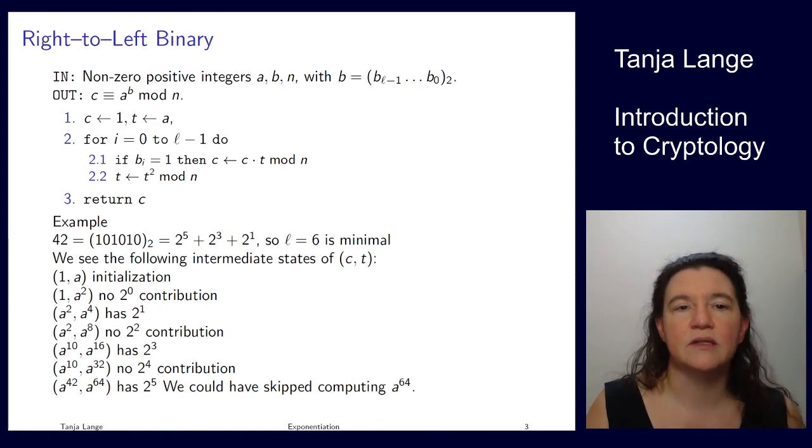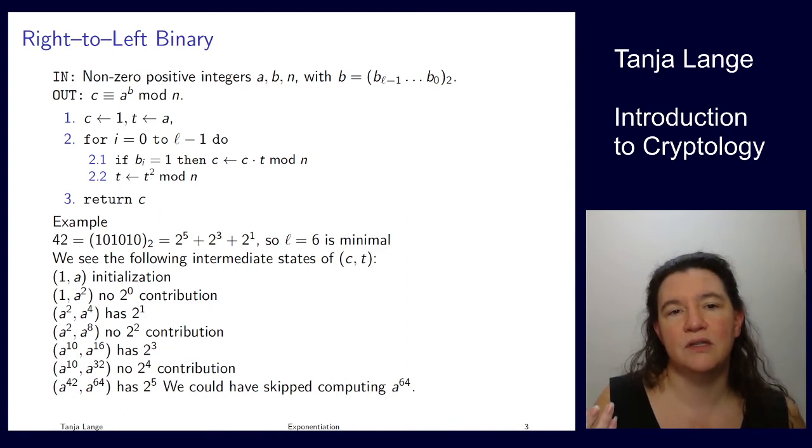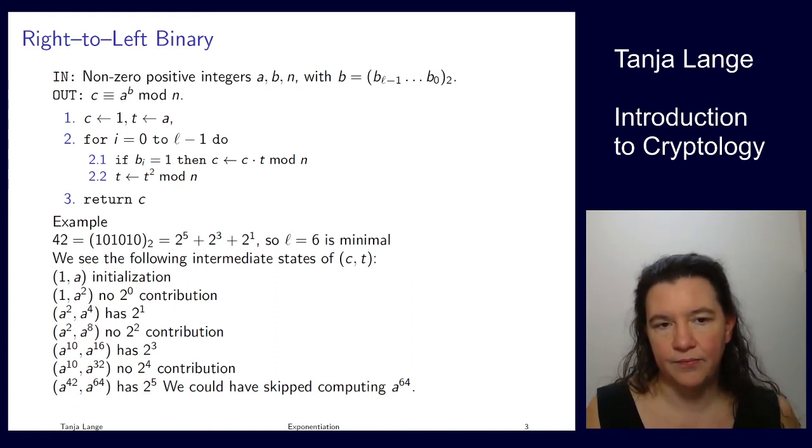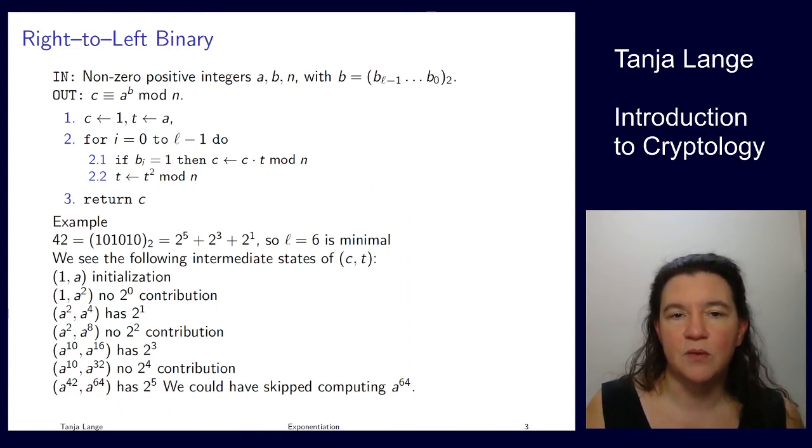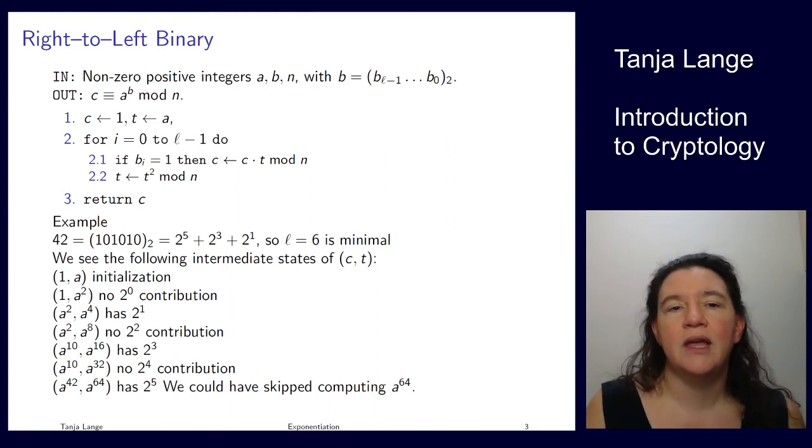So what we're seeing here is we're initializing so that c becomes 1 and t becomes a. So we have a temporary variable t and we have our output variable c. And then we're running through this loop from 0 to 5. And then we're first looking, is b0 equals 1? Now b0 in this case is 0, so we don't actually do a product there. And then we do a computation of squaring t, so t moves from a to a squared. Now then we encounter that the next b, b sub 1, is 1, so that was the 2 to the 1 appears there. And so we multiply c by t. Now t is a squared, so we're getting 1 times a squared. And we're again updating the value of t by squaring it.